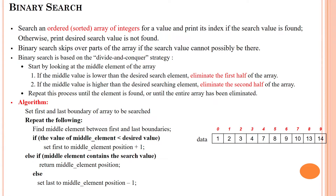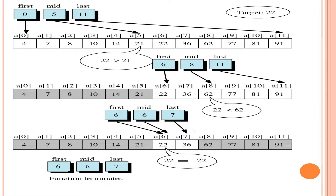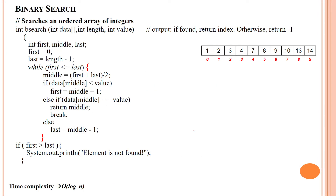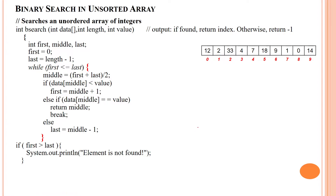Hi, welcome to binary search with unsorted array. Whenever we apply binary search, the array should be in sorted manner. If it is unsorted, we cannot apply binary search — we will check with an example to see why.